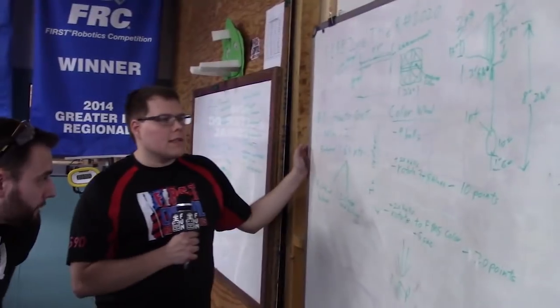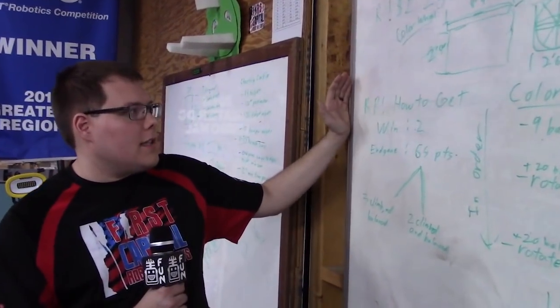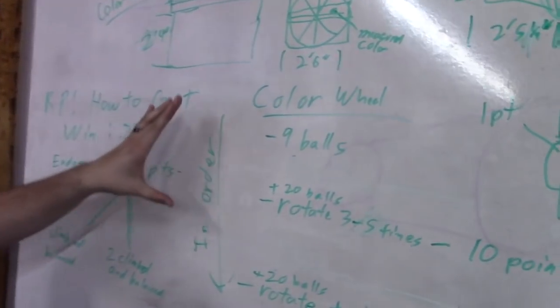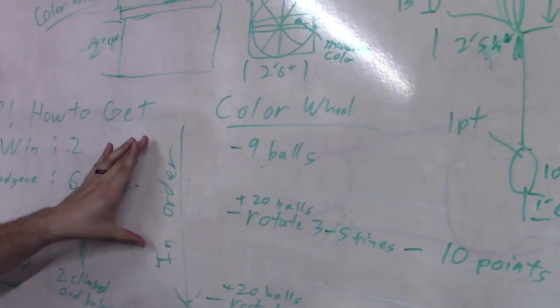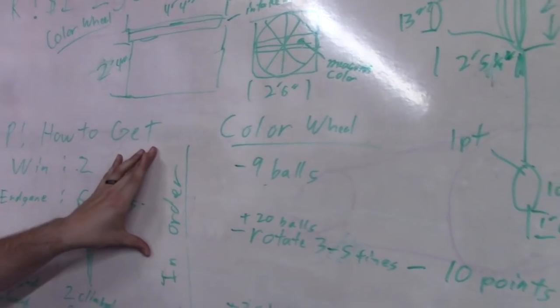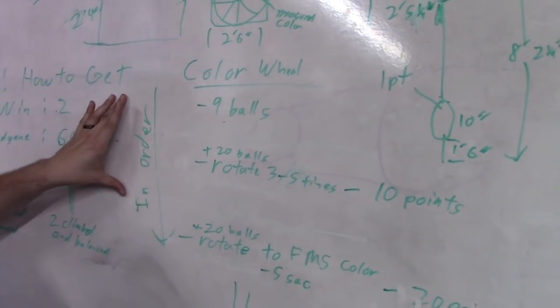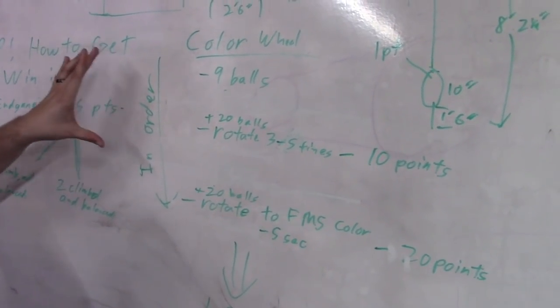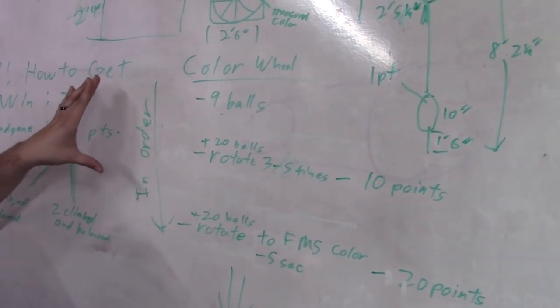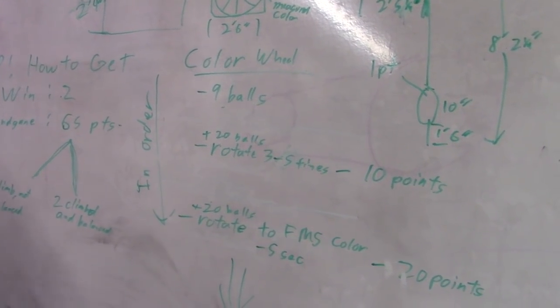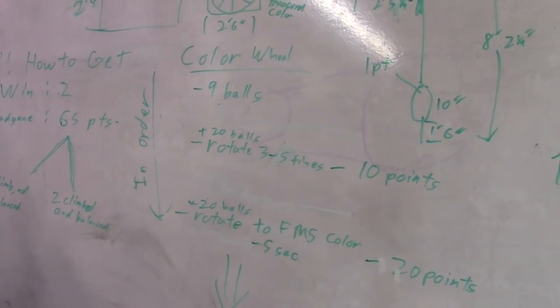Okay, to wrap up our analysis, looking at some of the remaining items here, there's the ranking points. So the color wheel has a whole complex system for how you get your ranking points that you have to do in order. We have it here on the board. You can read it in the manual, understand what that is. But obviously we want to make sure that we design a robot that can tackle all the different challenges of the game.